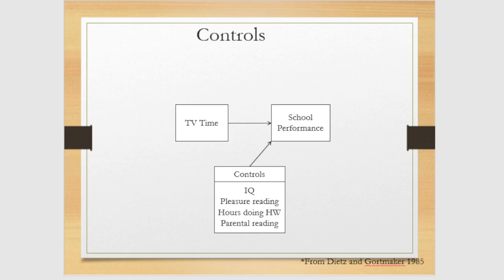We will be discussing controlling variables - potentially confounding variables that we need to account for but that do not drive our theory. For example, a theory was such that TV time had a negative effect on school performance.